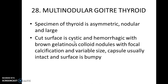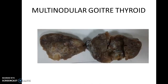The specimen of thyroid is asymmetric, nodular, and large. Cut surface is cystic and hemorrhagic with brown, gelatinous colloid nodules, focal calcification, variable size, and the capsule is usually intact, small, and bumpy. The examiner can ask you what are the stages in development of a goiter — it begins as a simple goiter and then becomes a multinodular goiter.